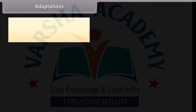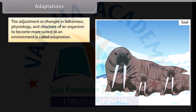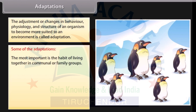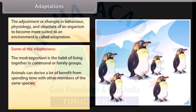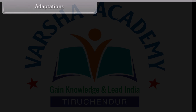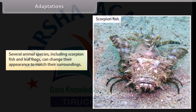Adaptations: The adjustment or changes in behaviour, physiology and structure of an organism to become more suited to an environment is called adaptation. One of the most important adaptations is the habit of living together in communal or family groups. Animals can derive a lot of benefit from spending time with other members of the same species — they can help each other find food, defend against predators, and care for young. Several animal species, including scorpion fish and leaf frogs, can change their appearance to match their surroundings.